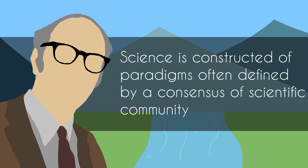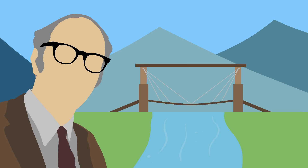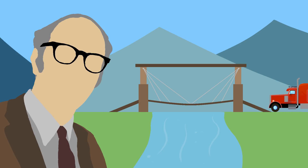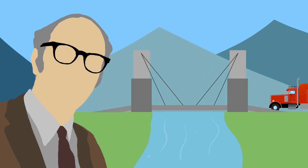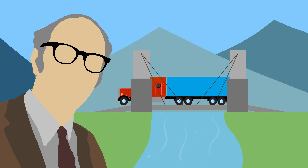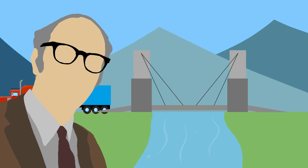Thomas Kuhn stated that science is constructed of paradigms often defined by a consensus of the scientific community. Hypotheses are generated to be in accordance with current paradigms. Contradictory evidence leads to revisions of hypotheses only if it fits the framework. If not, the results are ignored. However, when contradictory evidence stacks up, it results in a crisis and a paradigm shift is needed. The new paradigm is constructed to replace the old one and the cycle starts again. Some find this approach controversial, but it seems that it works effectively.